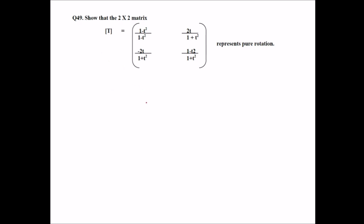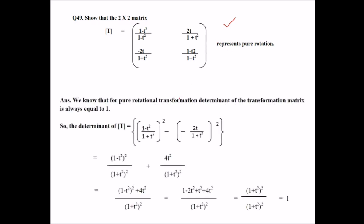Now show that 2 by 2 matrix, this represents a pure rotation. How to show it? So we know that for pure rotation transformation, determinant of the transformation matrix should be equal to 1. So we have to show that determinant of this matrix to be 1. So simply, you multiply this by this, multiply this by this, and take the subtraction.